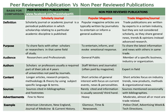The purpose of a scholarly journal is to share facts with other scholars or researchers in that same field of study. The purpose of a popular magazine article is to entertain, inform and evoke an emotional response. Whereas the purpose of trade publications is to share the latest information and news with others in the same trade.